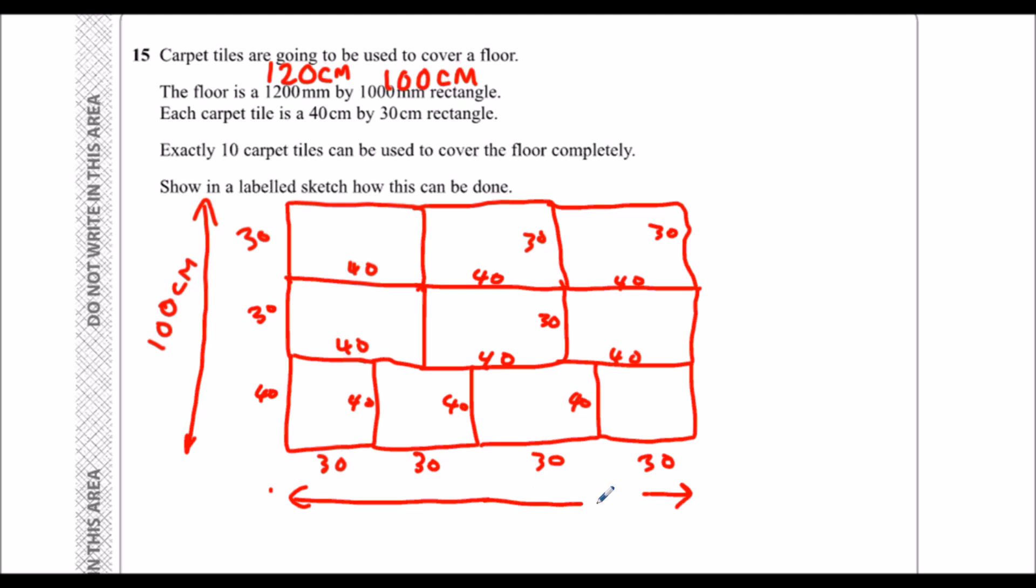So if I arrange them like that, I have 100cm by 120 with exactly 1, 2, 3, 4, 5, 6, 7, 8, 9, 10 tiles.